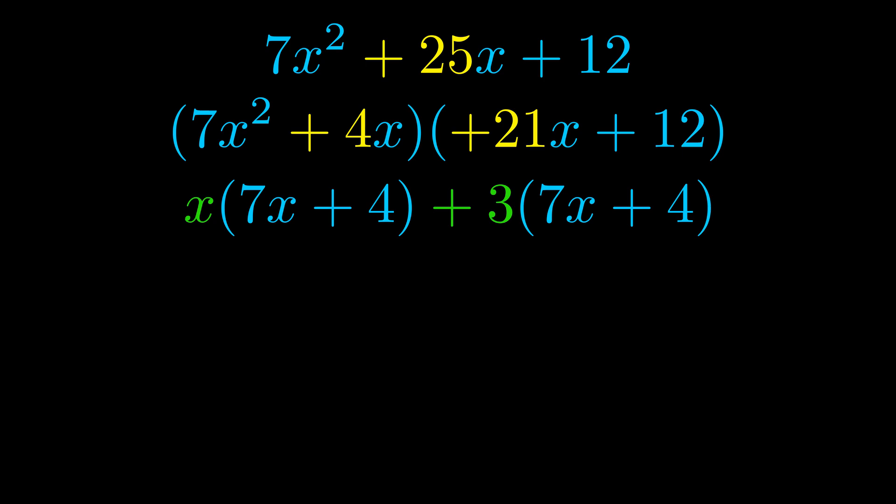Notice also how what remains inside of the parentheses is the same in both cases. The blue values are the same. Those blue values will become one of our factors and we will combine the two green values, the GCFs that we pulled out, to get the other one. And that is our fully factored equation.